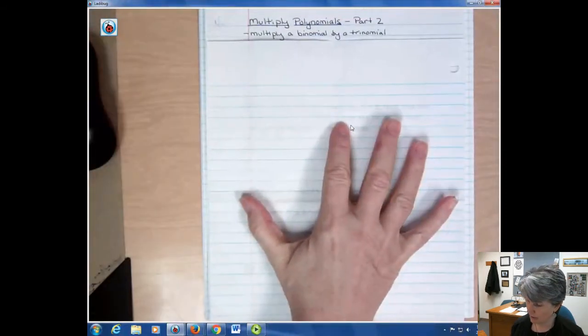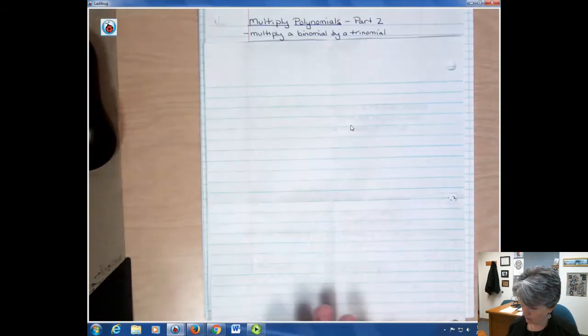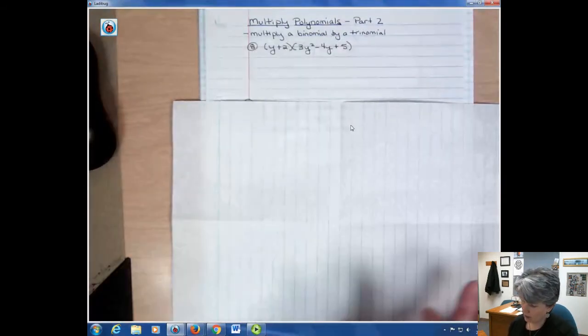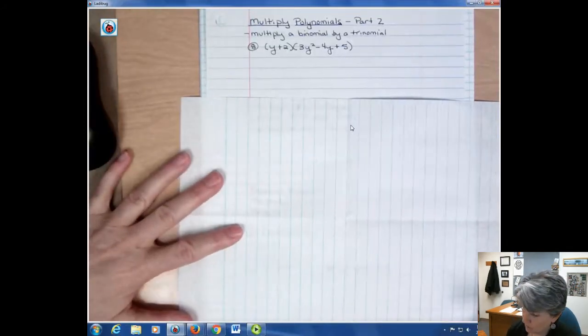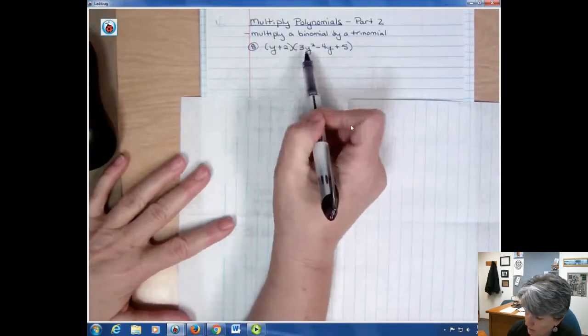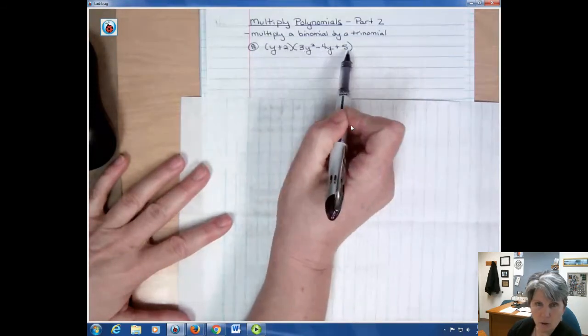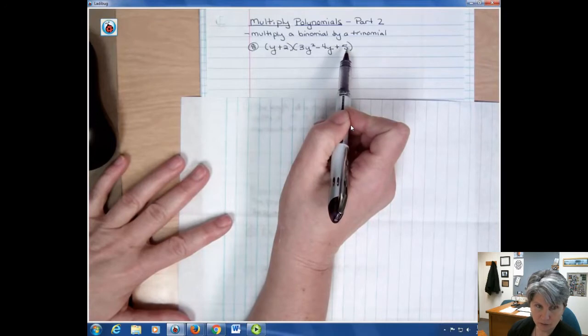In the last video we were doing binomials by binomials, which requires the FOIL method. There's no great shortcut way to talk about this. But what you need to understand is that I'm multiplying the y times everything, and then I'm multiplying the 2 times everything. So in order to do this problem I need to do 6 different multiplications.